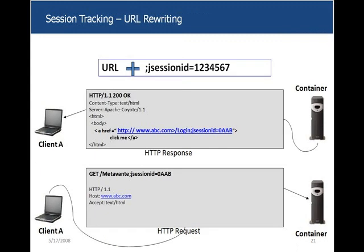The second way is URL rewriting. Clients can disable cookies on their computer. A client can say it doesn't trust anyone and doesn't want to accept cookies from any websites. If cookies are disabled, the server won't be able to send a cookie to the client — even if it sends one, that cookie won't be stored on the client machine. So how can a session be maintained in that scenario? The answer is URL rewriting.